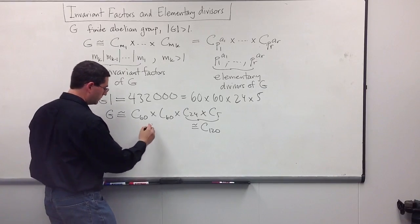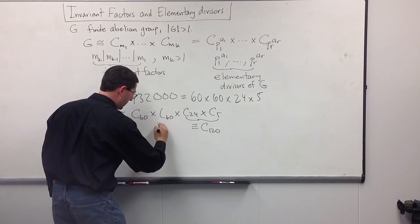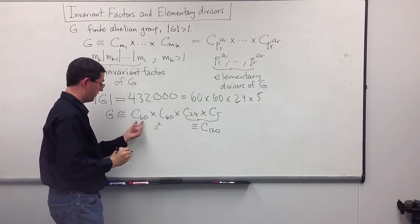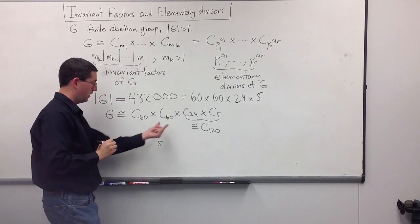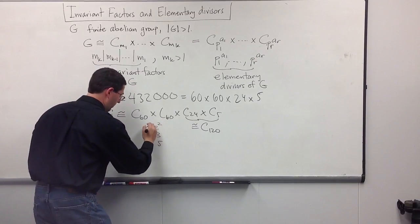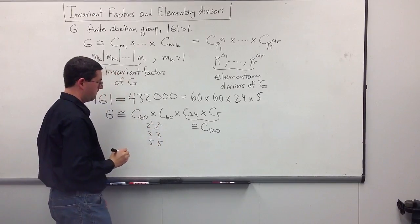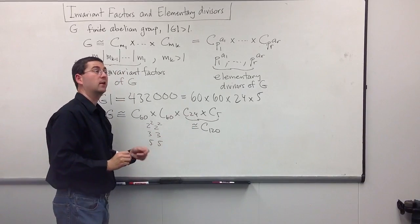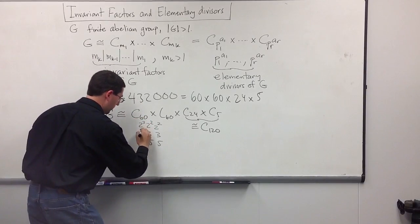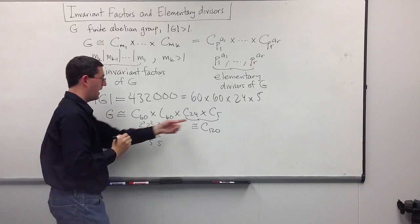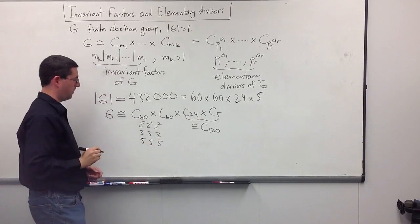I'm going to start with 60. And, I'm going to write down as prime factorization. And, I'm going to do it in a vertical way. So, 60 is 2 squared times 3 times 5. I have another 60. I'm just going to write over here. 2 squared times 3 times 5. I have a 24. That's, again, going to be 2 squared. No, 2 cubed this time. Times 3. And, then I have a 5. And, I'm just going to put that on the bottom there. There's a little empty spot.